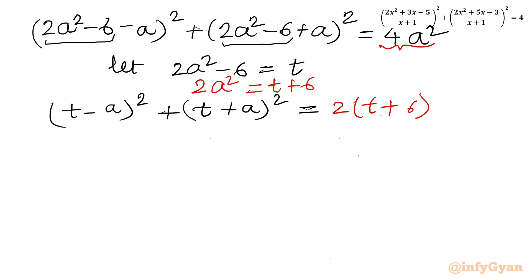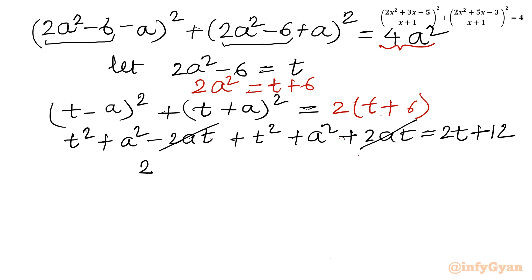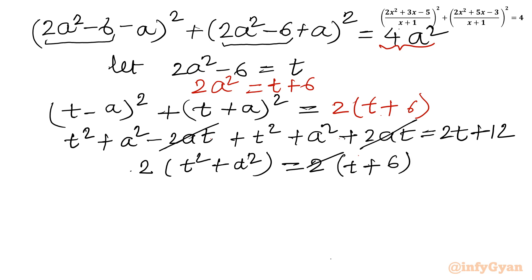Now I will use the algebraic identity. Expanding: (t² + a² - 2at) + (t² + a² + 2at) = 2(t + 6). The -2at and +2at cancel, leaving 2t² + 2a² = 2t + 12. Dividing both sides by 2: t² + a² = t + 6.